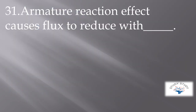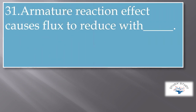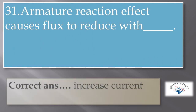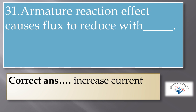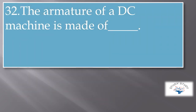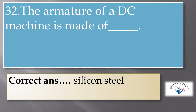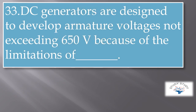Armature reaction effect causes flux to reduce with increased current. DC generators are designed to develop armature voltages not exceeding 650 V because of the limitation of the commutator.